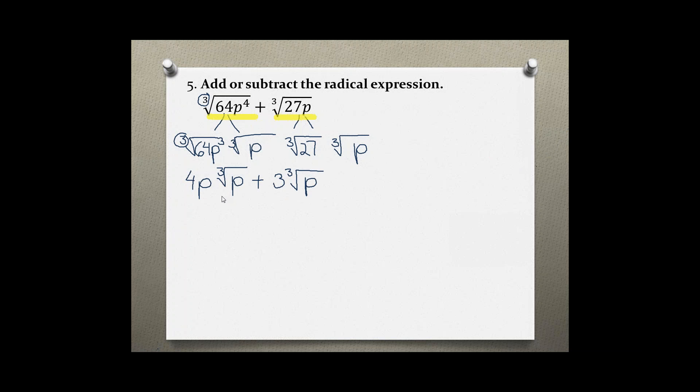Now you need to realize that even though we simplified each radical expression, we still don't have like terms. In this term we have a p outside, but over here we don't. Only the cube root of p is the same, which means they are not like radicals.